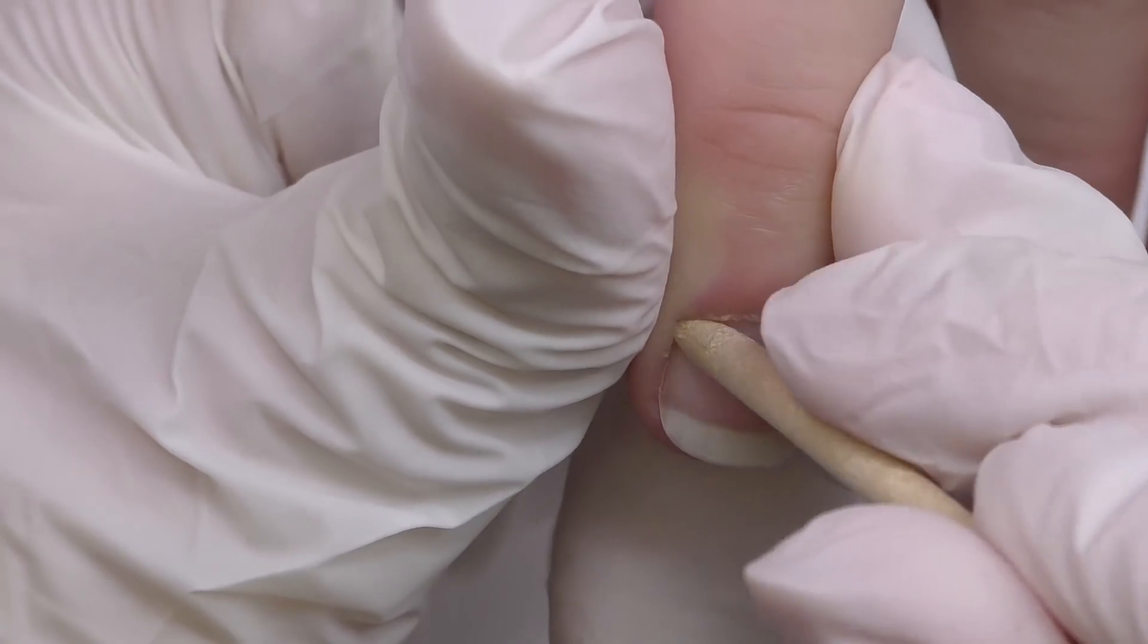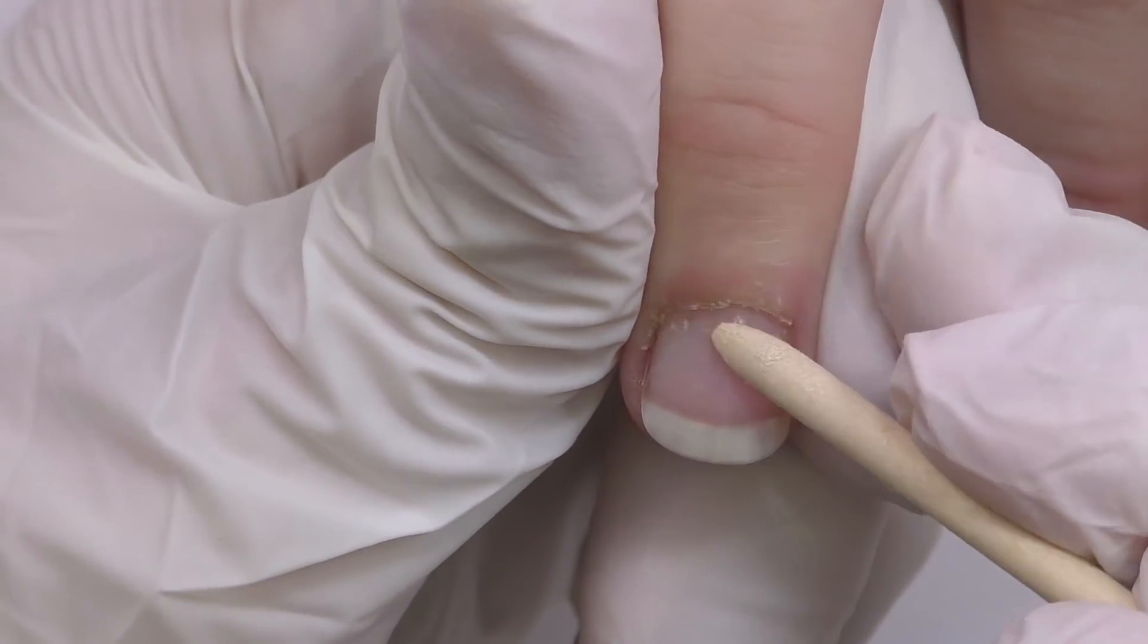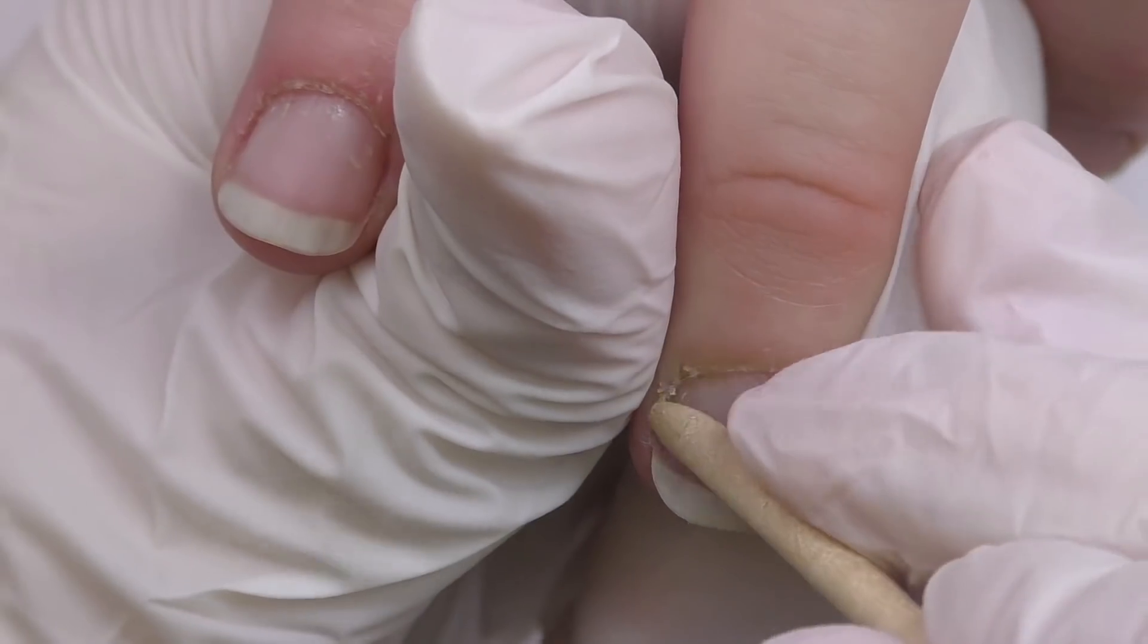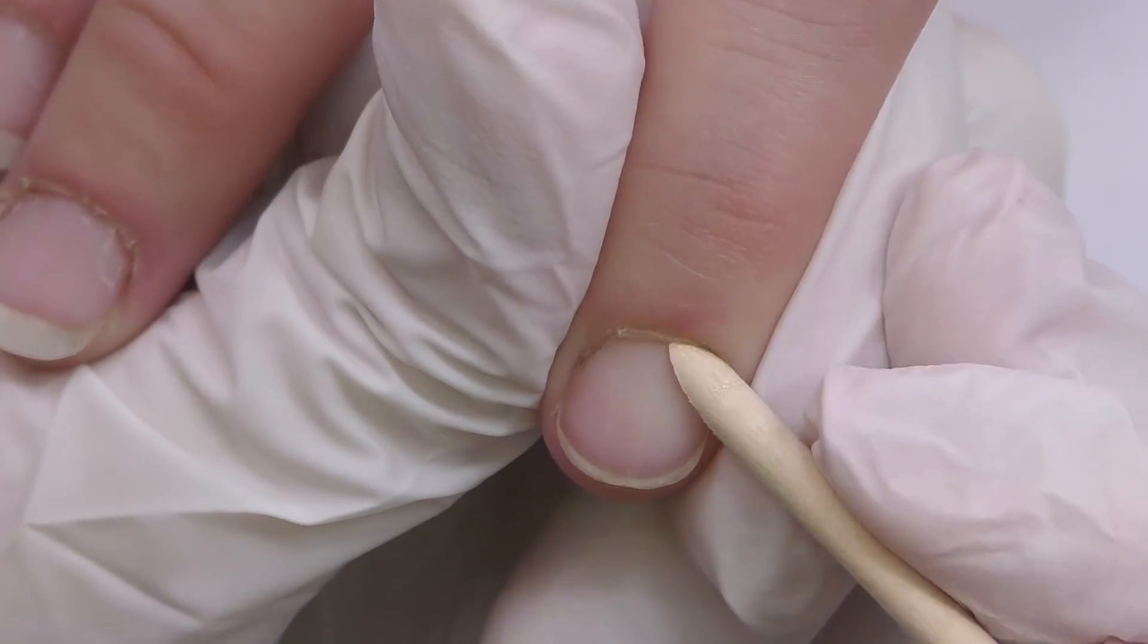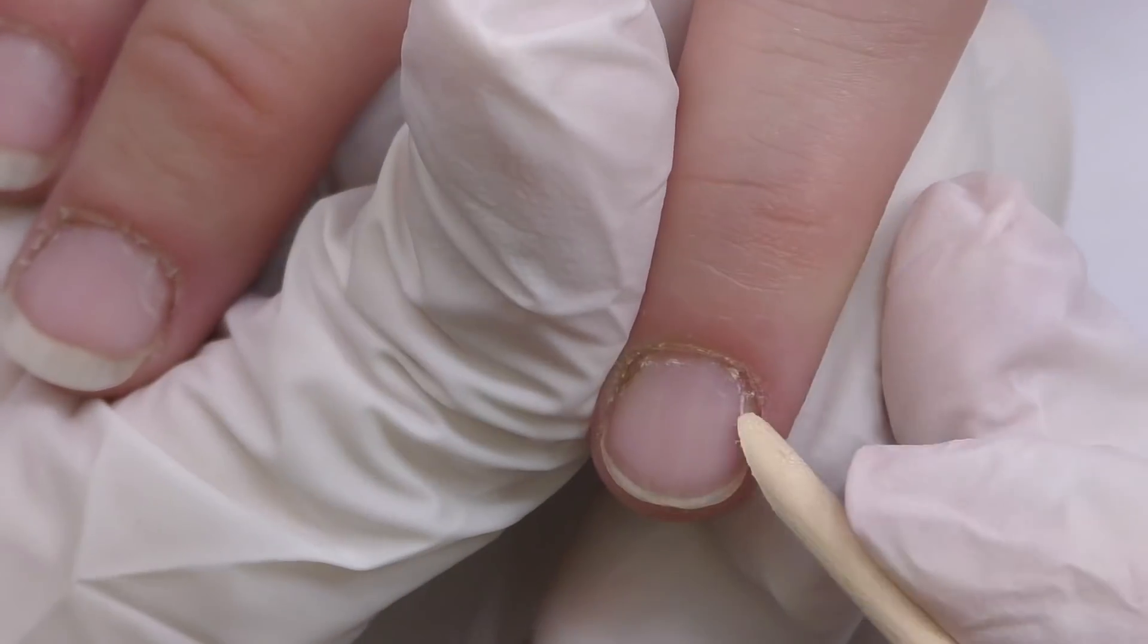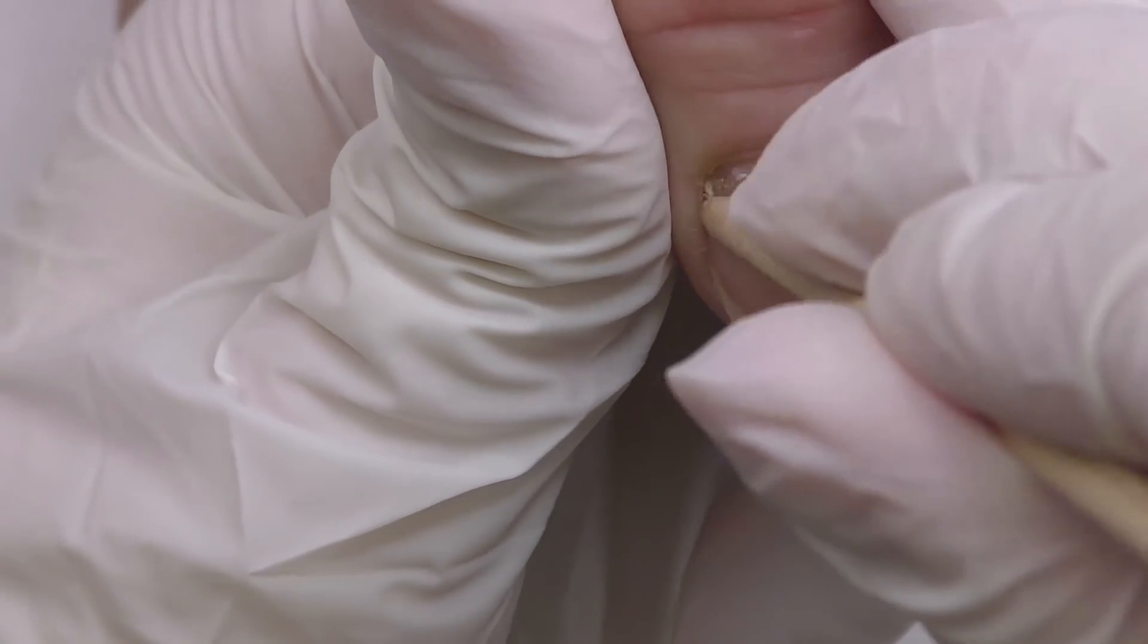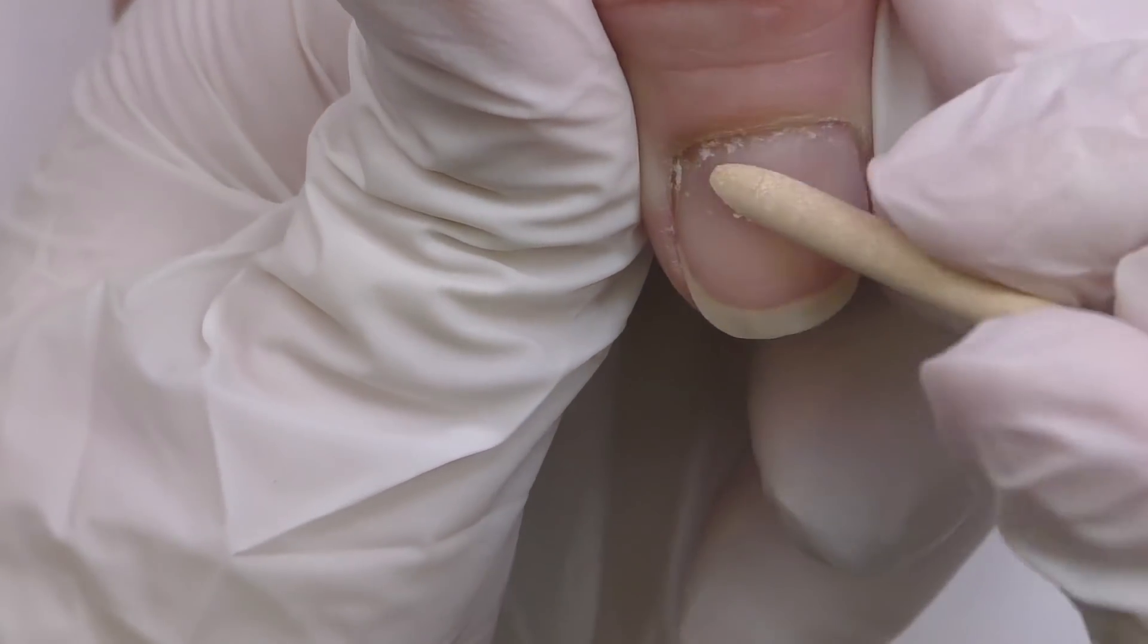So I started pushing back the cuticle with the orange wood stick. Using orange wood stick for pushing back the cuticle is a great idea because this is a single use tool and you do not need to sanitize it. You can just give it to your client when you are done.